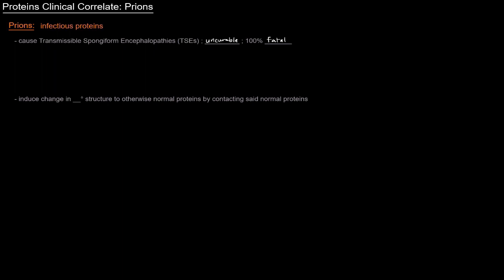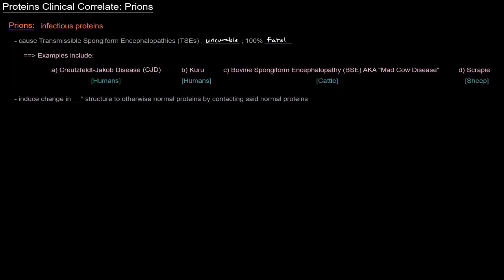Some examples of transmissible spongiform encephalopathies that are caused by prions are Creutzfeldt-Jakob disease, or CJD. There's some different versions of that that affects humans. And Kuru also infects humans, so those are obviously the more important ones medically. But there's also bovine spongiform encephalopathy, or BSE, popularly known as mad cow disease, which of course infects cattle. And then there's scrapie, which infects sheep.